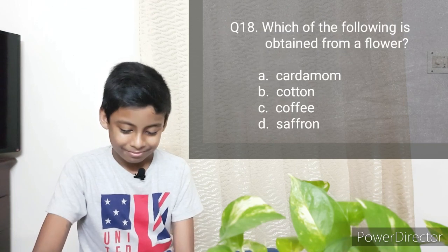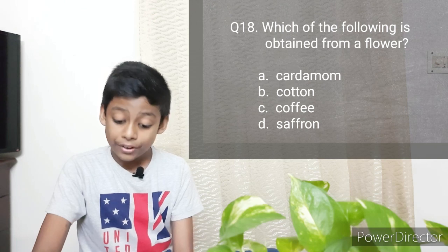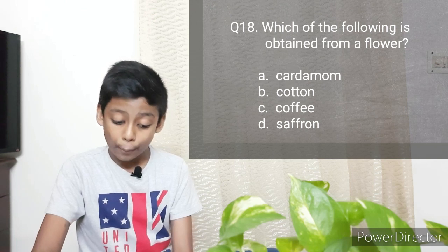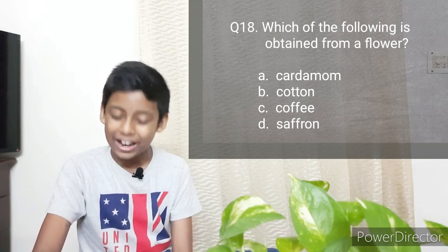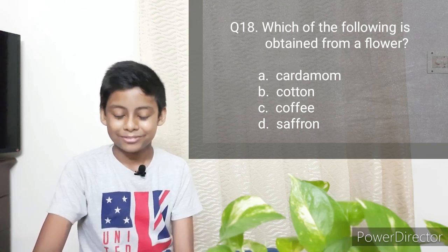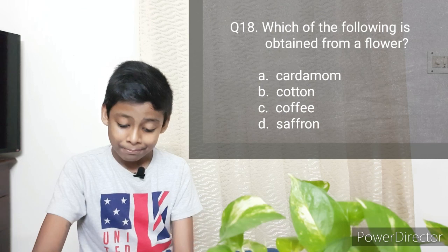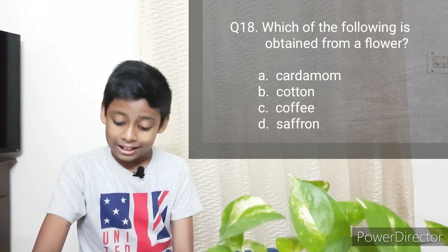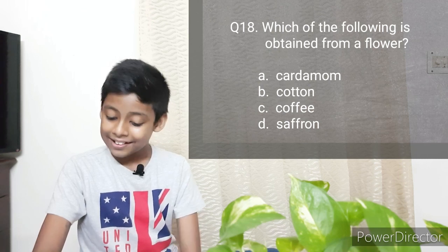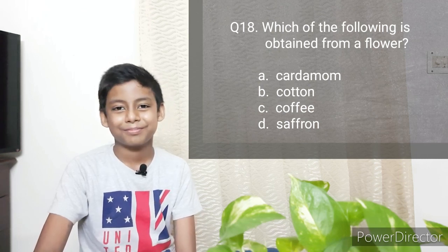The eighteenth question: Which of the following is obtained from a flower? Options: Cardamom, Cotton, Coffee, Saffron. The answer is Saffron.